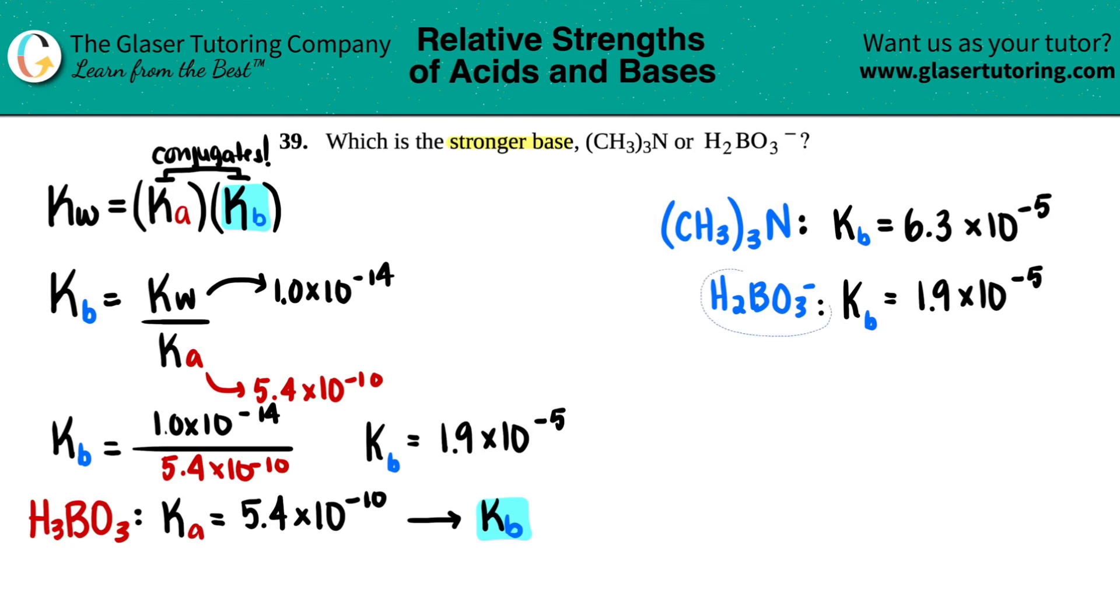Now since we have two Kb values, we can compare the two of them. All we got to do is look at these Kb's, because the higher the Kb value - as you increase in your Kb, you're going to increase in basicity. The higher the Kb, the stronger the base. We have a Kb of 6.3 times 10 to the -5, and we have a Kb of 1.9 times 10 to the -5. This one rules - this one is higher. If that's the case, that means this one is stronger.